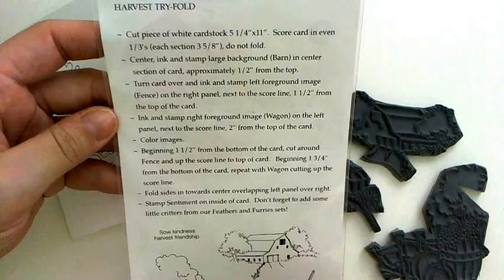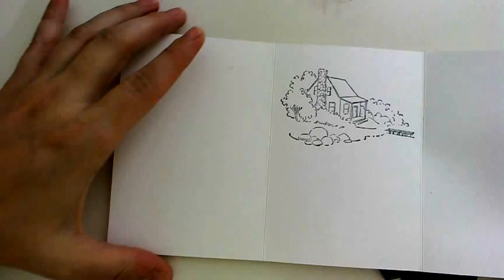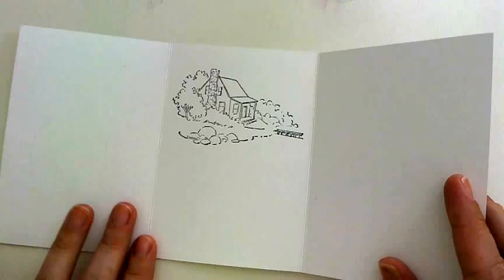So it's really simple. You cut your paper to five and a quarter tall and eleven inches wide, and then you're supposed to score it so that you have three equal folds. Now scoring it can be a little bit tricky.